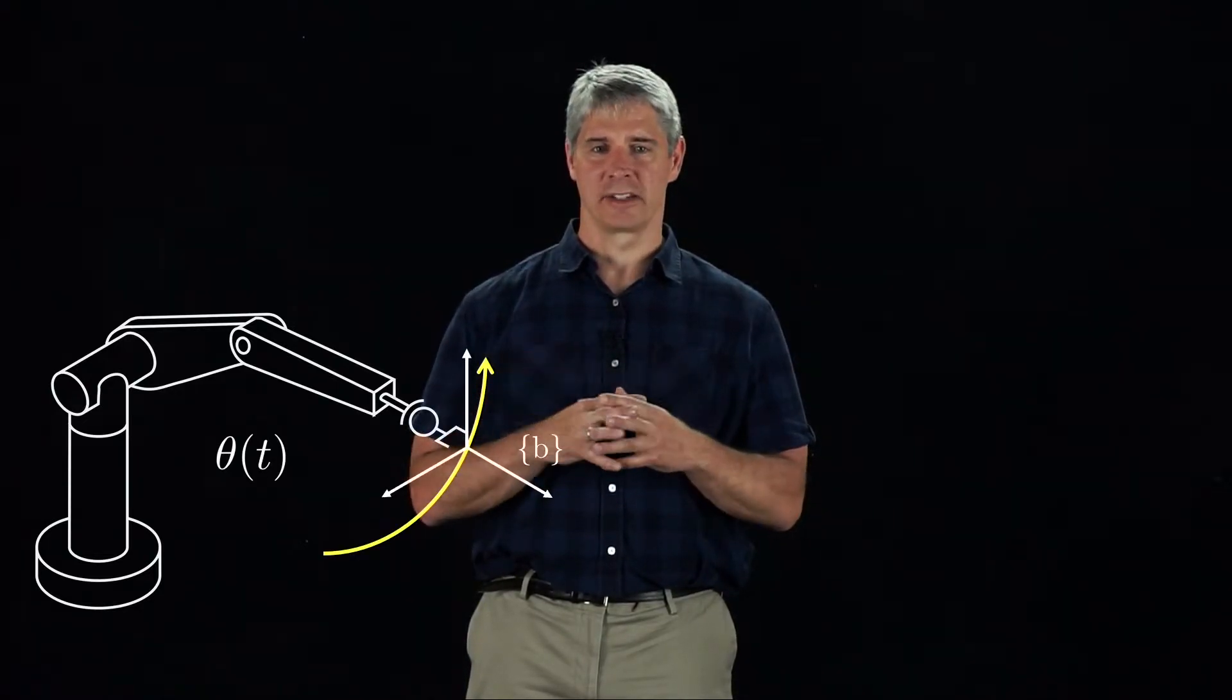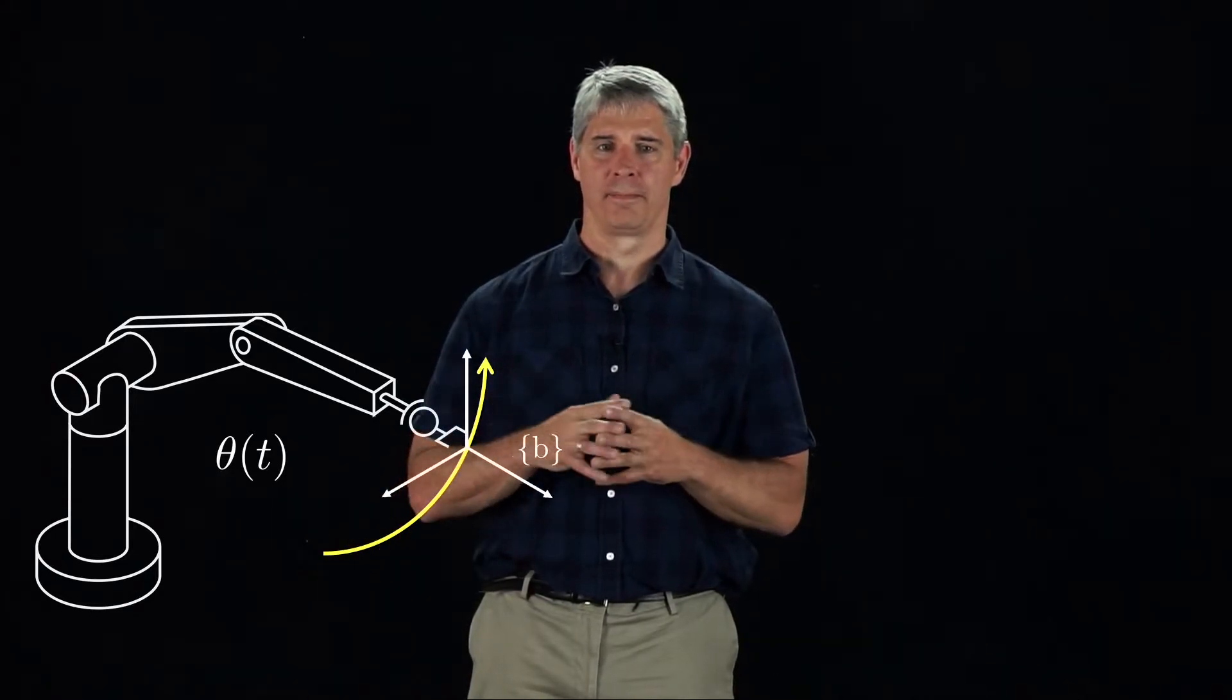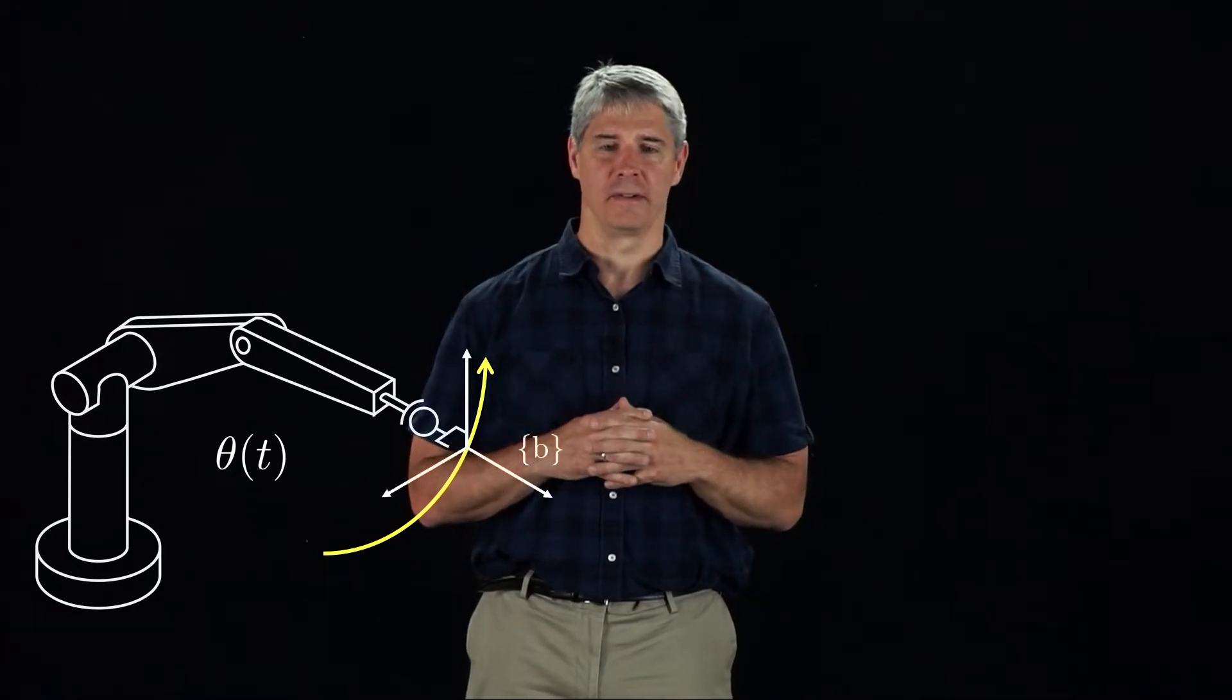Here you can see a 6R robot with a frame B at the hand. Imagine that the joints are moving according to a trajectory, theta of t. The changing joint angles theta as a function of time move the hand along the path shown in yellow. The hand is moving in free space, so it is applying no forces to the environment.